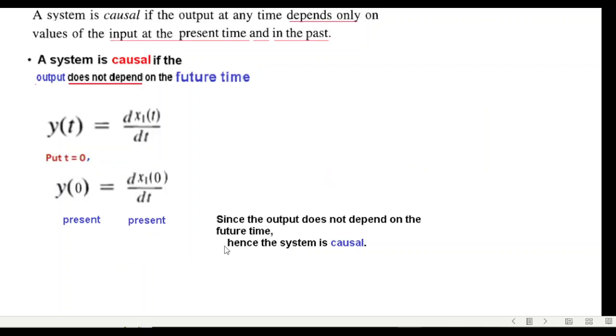And finally the system, nothing different. Just put t equals zero, present time, present time, and therefore it is a causal system. So I hope you have been able to follow this. Let me know, you can comment. Thank you.